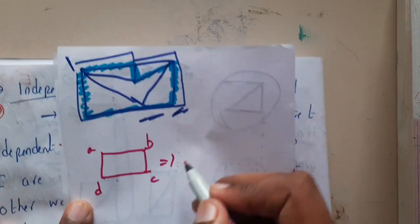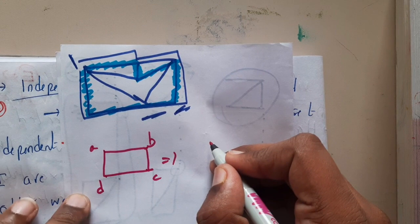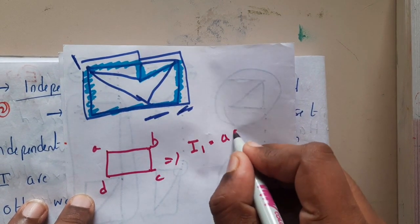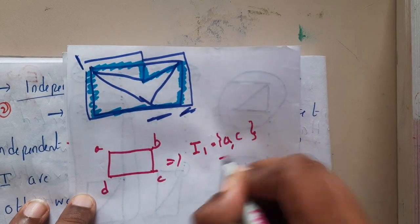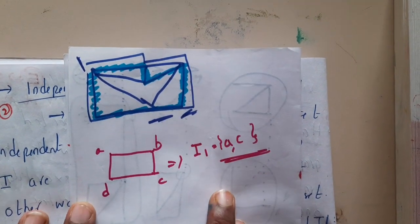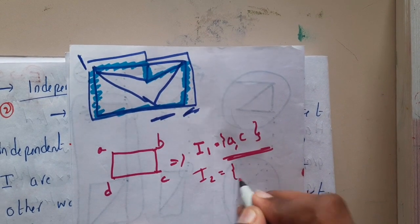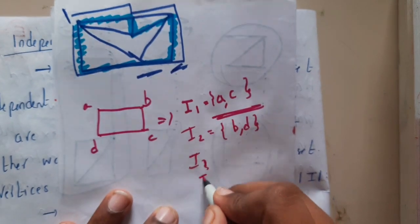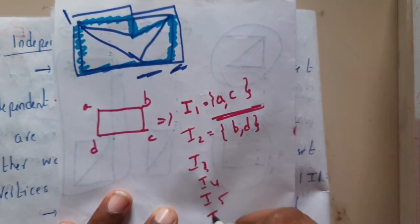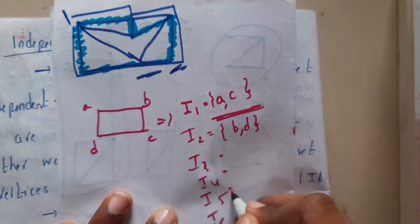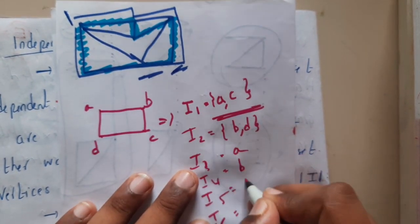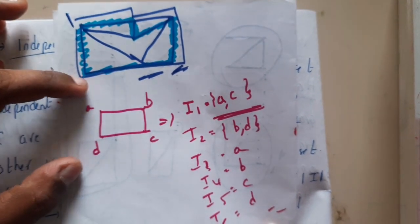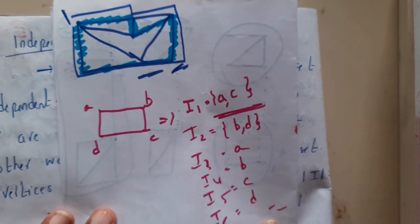In this graph, what are the independent sets? One independent set could be AC. Similarly, you can also have an independent set BD. Similarly, you can have I3, I4, I5, I6 of individual elements. These are all possible combination sets of independent sets of vertices A, B, C, D in this graph.